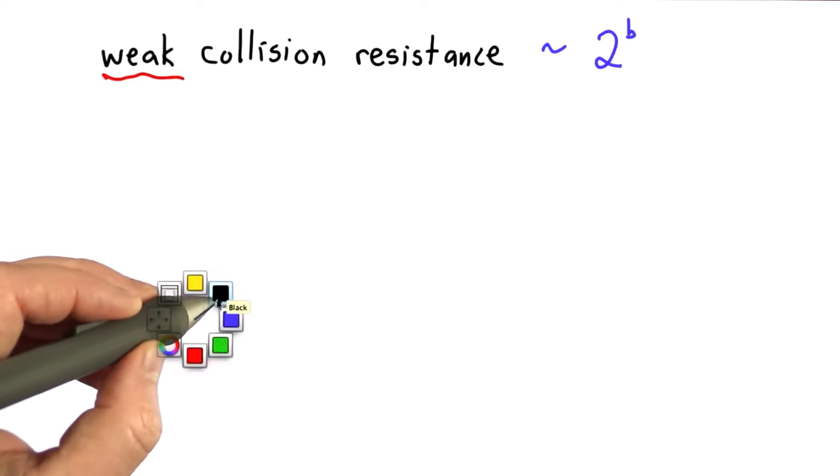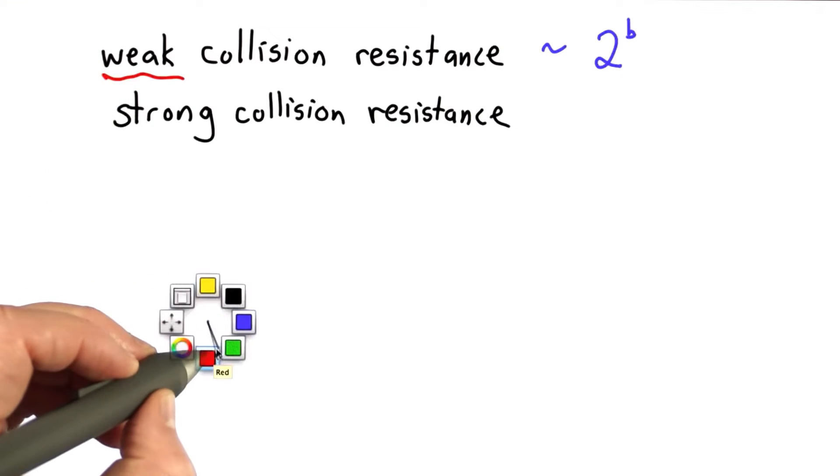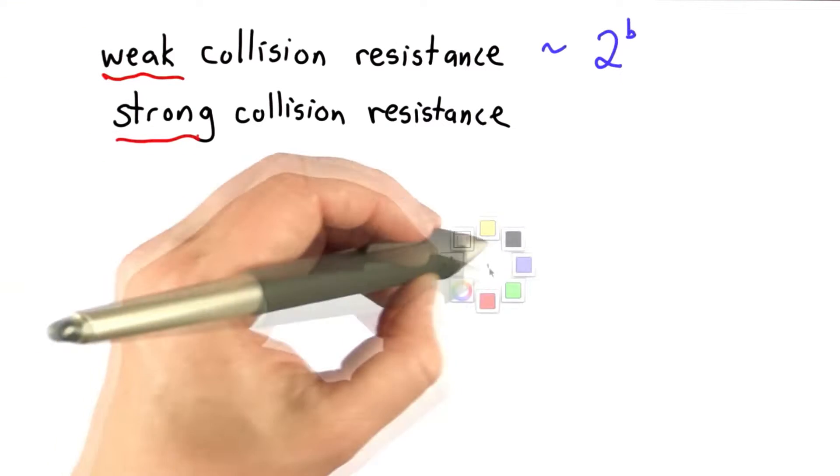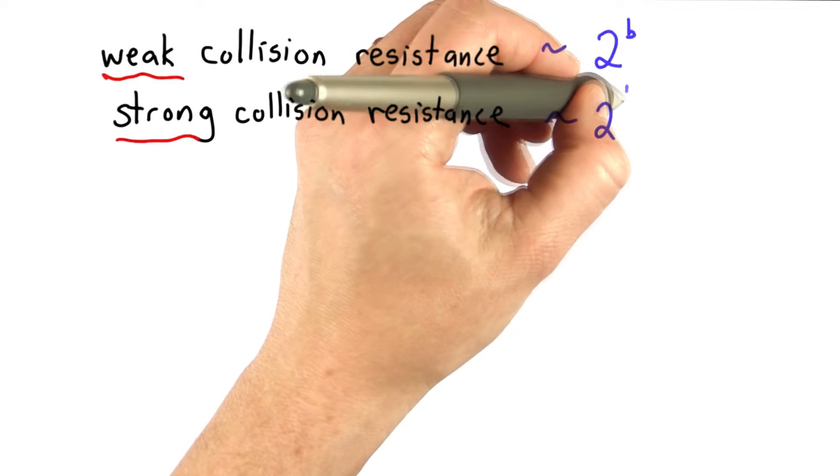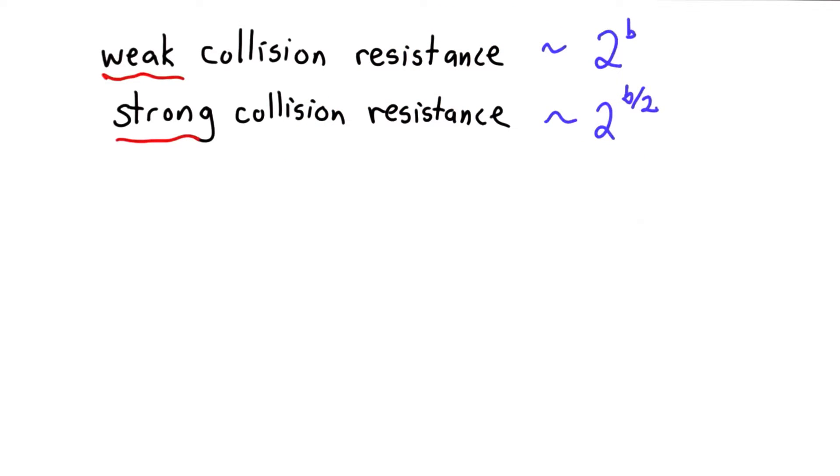Strong collision resistance is harder than weak. To obtain strong collision resistance is actually much harder, and we'll see that we need about twice as many bits for that. The attacker's effort is more like 2 to the b over 2, so we'll need about twice as many output bits in our hash function to provide this.